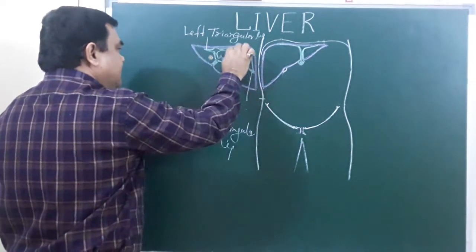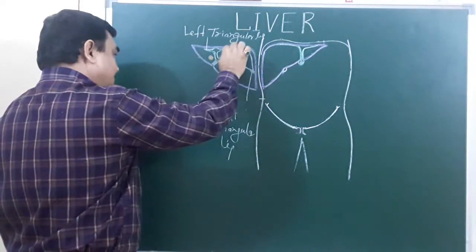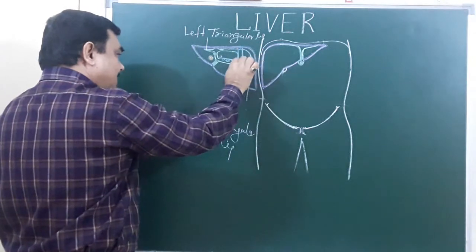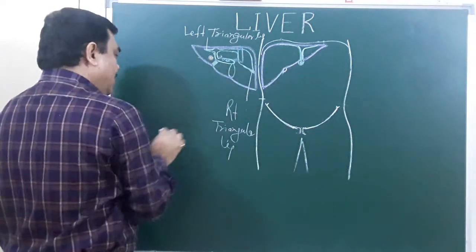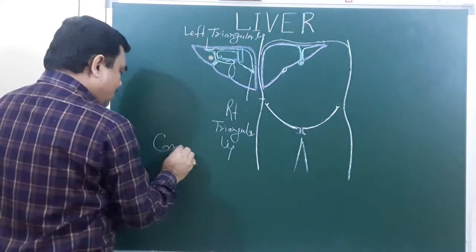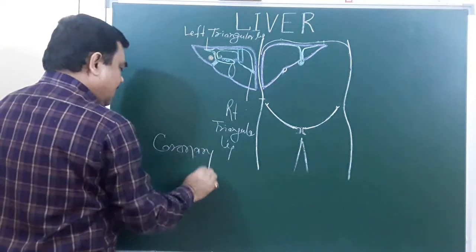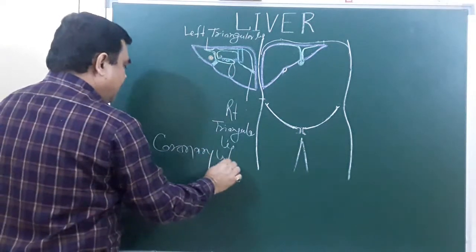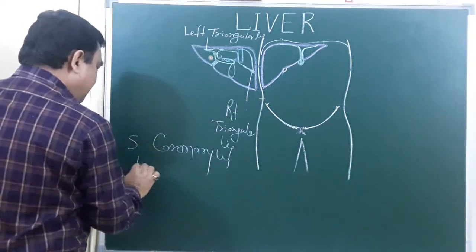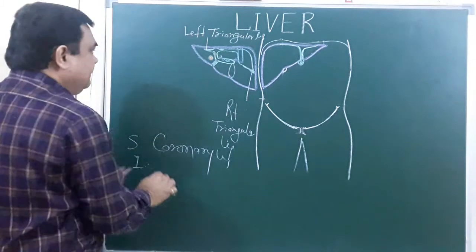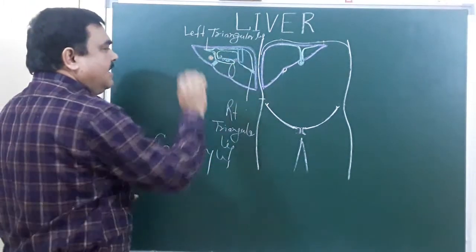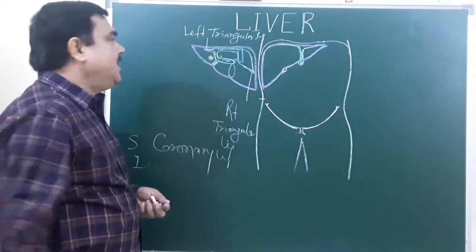Here is this ligament — this is the superior coronary ligament and this is the inferior coronary ligament. That is the superior and inferior coronary ligament.